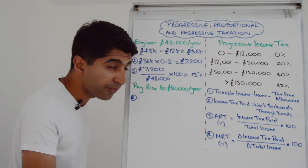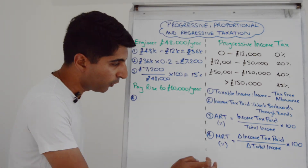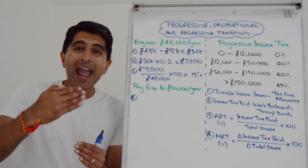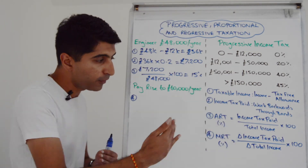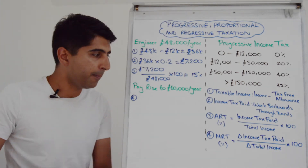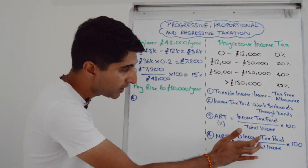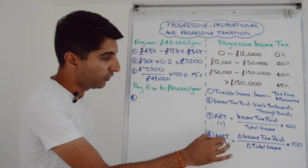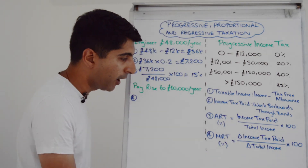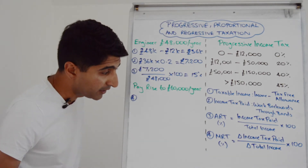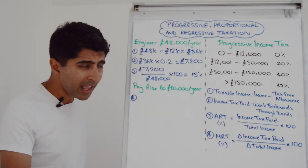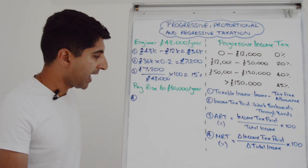The last equation is the marginal rate of tax — the extra income tax paid when any extra income is earned. So if someone receives a pay rise, how much extra income tax has to be paid? As an equation: the change in income tax paid divided by the change in total income, times 100. That percentage says, of any extra income you're earning, how much is going in income tax.